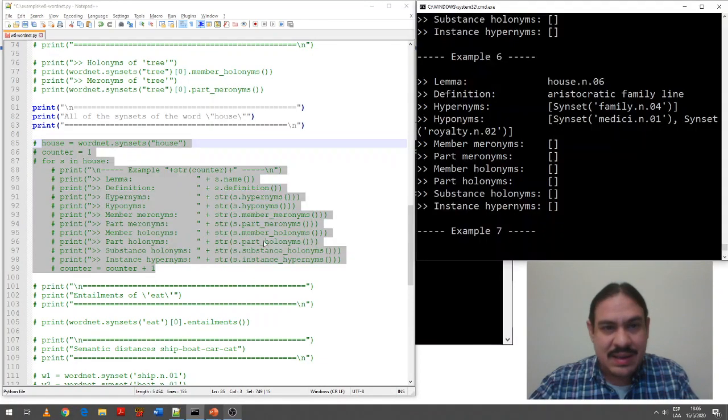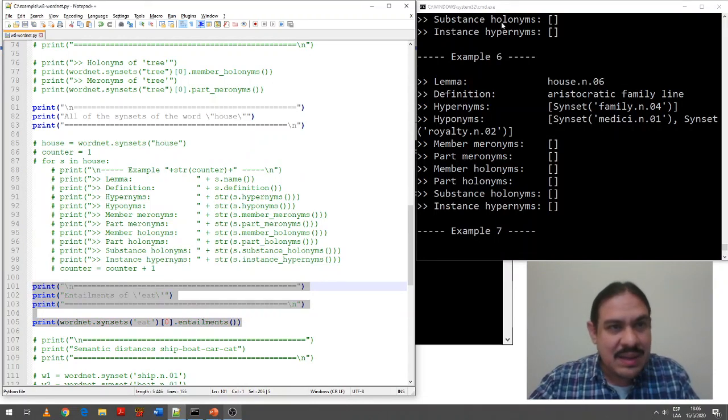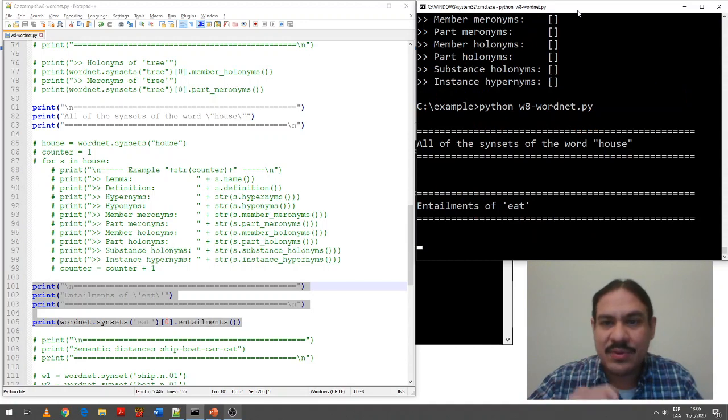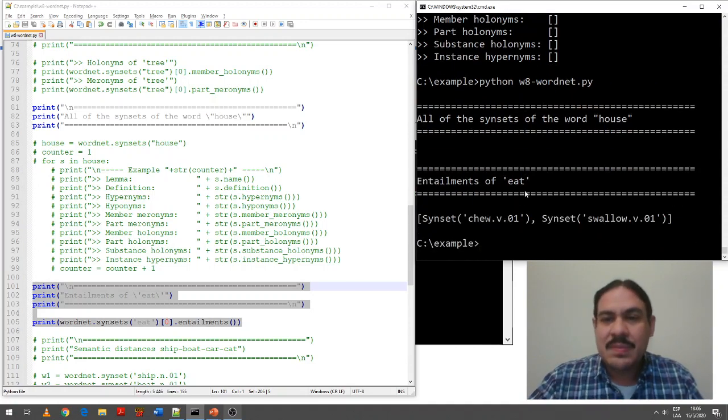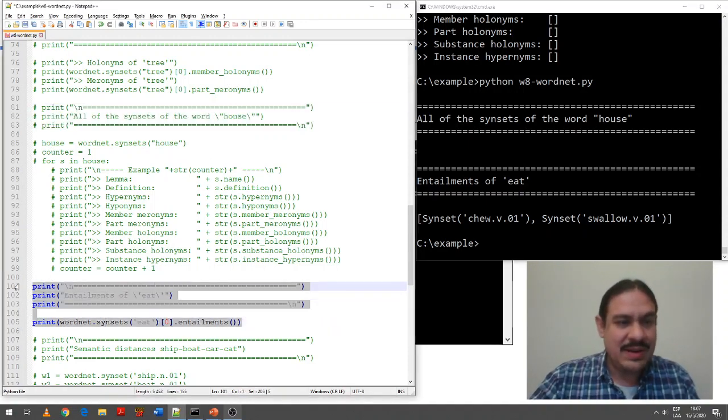Let's look at the example. Here I have the example for just that code, to eat. And we're going to look at the very first synset. If you're eating, you're also chewing. If you're eating, you're also swallowing, and so forth. All right.